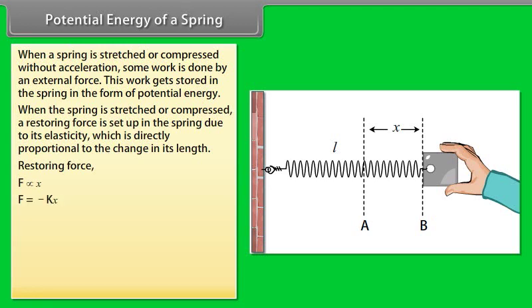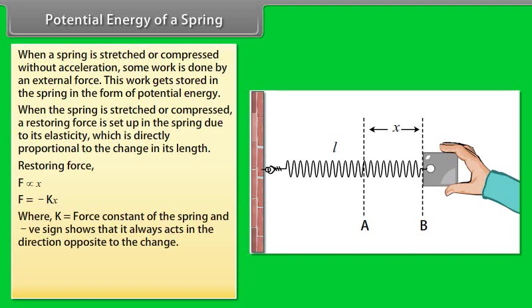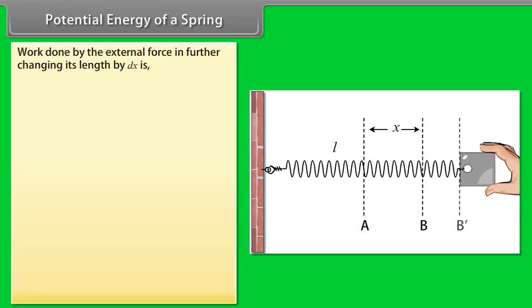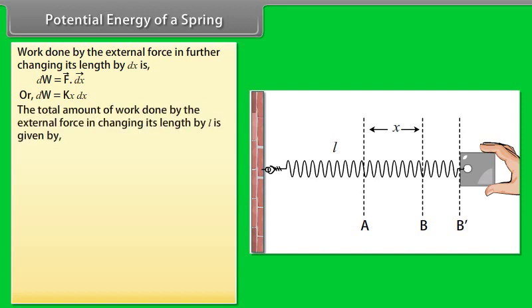Negative sign shows that it always acts in the direction opposite to the change. Then external force required at this instant is given by F is equal to Kx. Work done by the external force in further changing its length by dx is dw is equal to dot product of F vector and dx vector, or dw is equal to Kx dx.